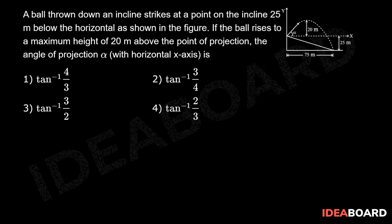Now, clearly the maximum height is 20 meters, so 20 = u² sin² α / 2g, which implies u sin α = √(20 × 20) = 20 meters per second.